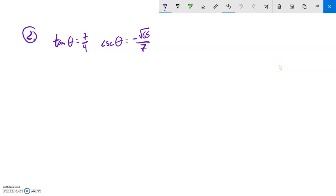This is Math 142, the final practice, and we're doing question number two. We're supposed to find the exact value of all six trig functions of theta, and we're given a couple pieces of information. We know that tangent is 7 fourths. We know the cosecant is negative root 65 over 7.